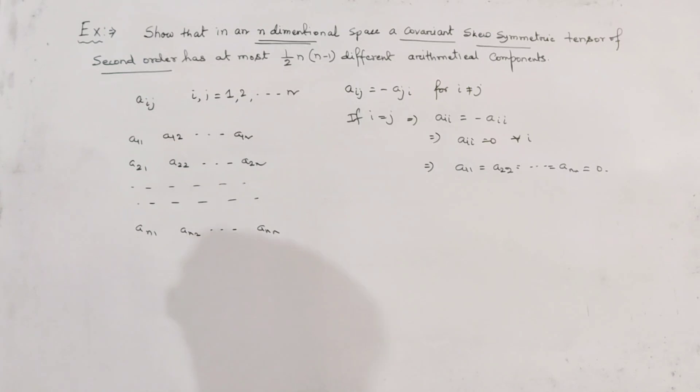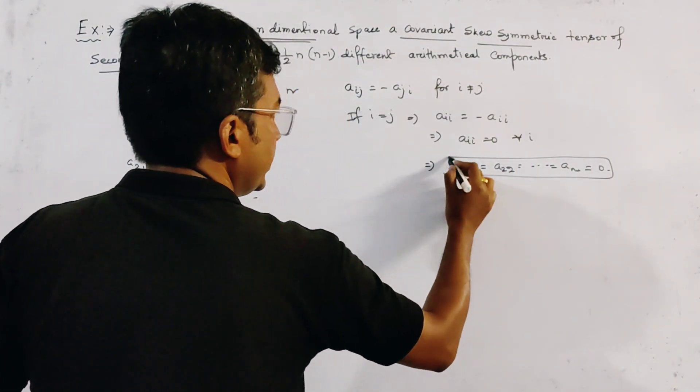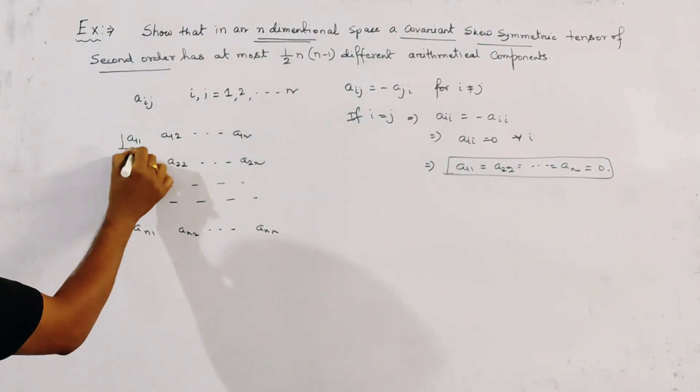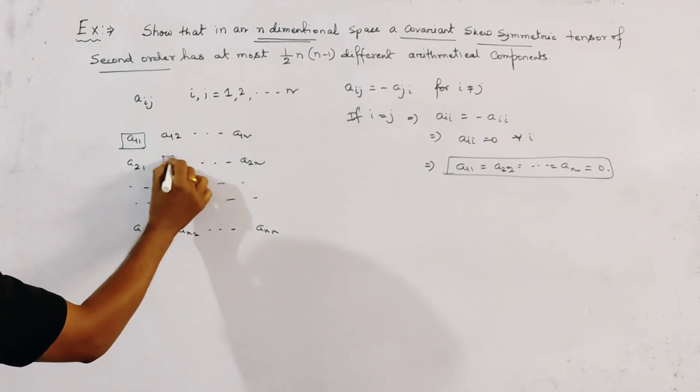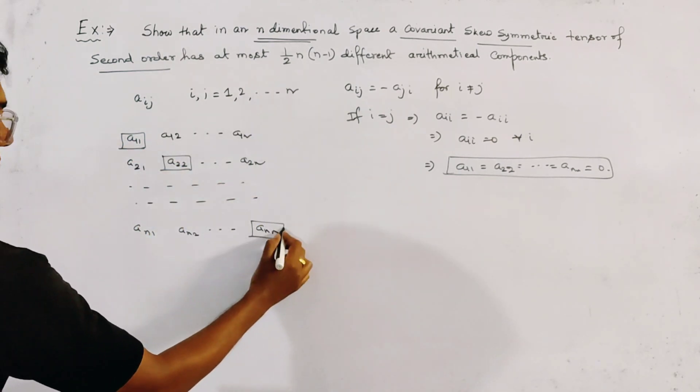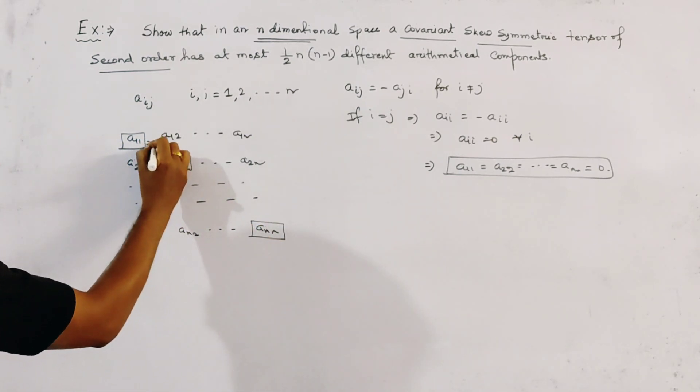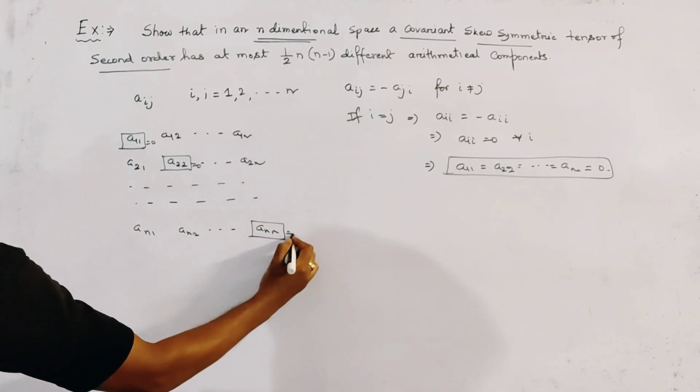And clearly from this relation we write this, this and this. That is, all the elements of the principal diagonal are equal to 0.